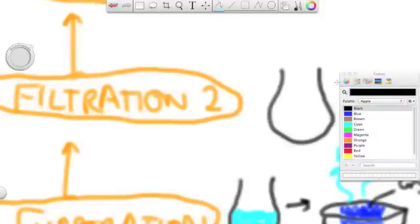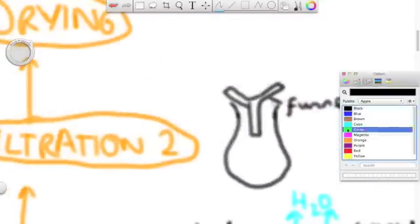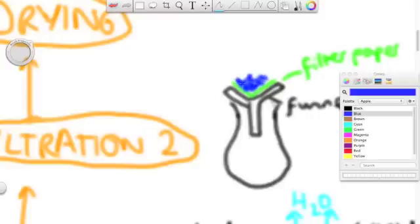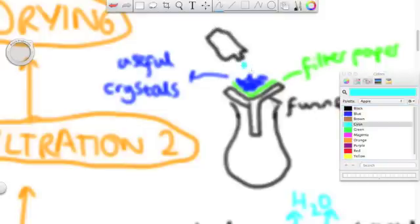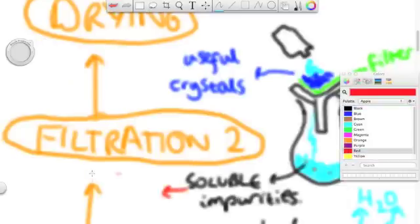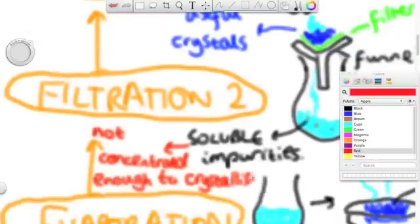Once you've got crystals, you can then put the crystals in the filter paper again, and you can pour through another solvent. And what happens is, the small soluble impurities now, are not concentrated enough to form crystals, so they pour through, dissolve inside the solvent, and they are separated from your crystals. That second round of purification removes soluble impurities now. So, now you've got rid of all the insoluble impurities, and the soluble impurities.